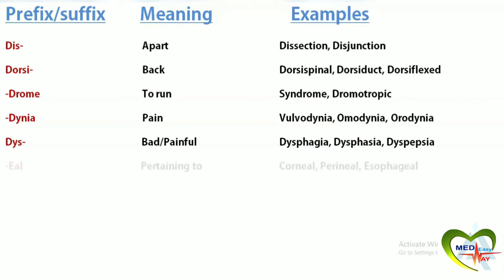Eal means pertaining to or relating to. Corneal refers to the transparent surface of the eyeball. Perineal relates to the perineum. Esophageal relates to the esophagus.